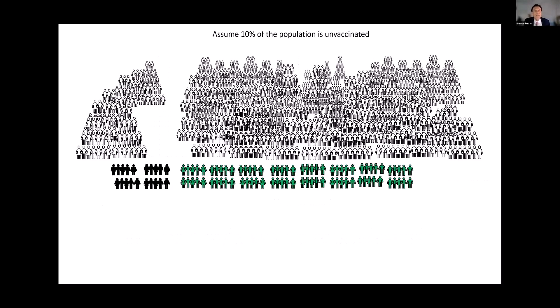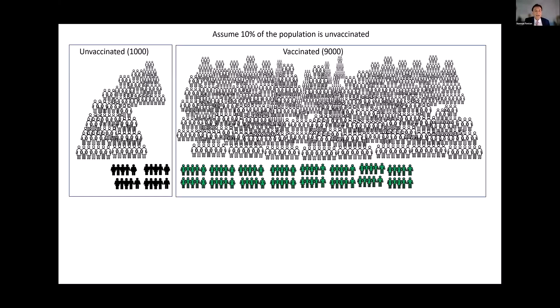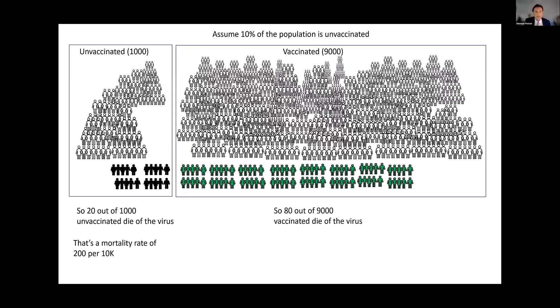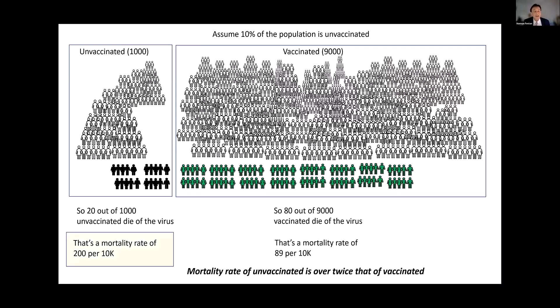Let's assume 10% of the population is unvaccinated — so 1,000 unvaccinated and 9,000 vaccinated. Then 20 out of 1,000 unvaccinated die, a mortality rate of 200 per 10k, while 80 out of 9,000 vaccinated die, a mortality rate of 89 per 10k. The mortality rate of the unvaccinated is over twice that of the vaccinated, which would be very powerful support for the vaccine.